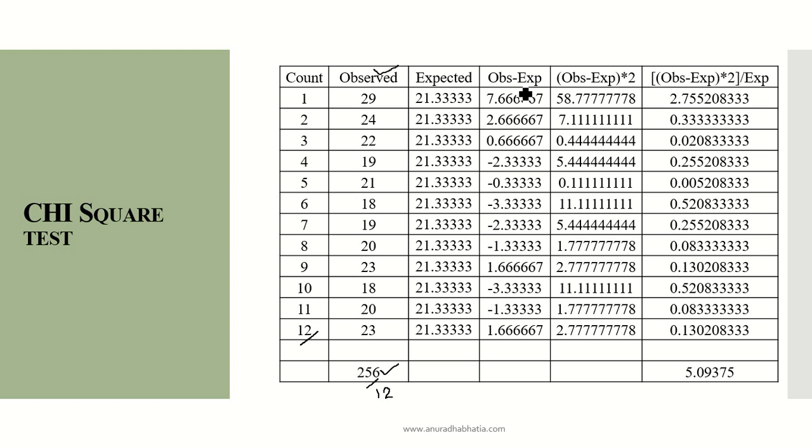The next step is observation minus expected. We usually did a row or column when there were two variables, but here there's only one observed column. The observation is 29 minus 21.333333, and we calculate this for all 12 values to get the observation minus expected values.